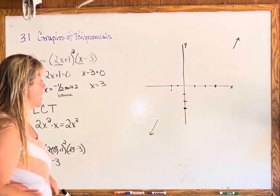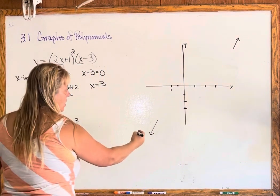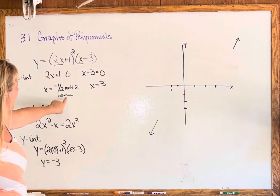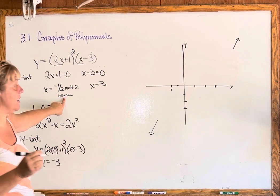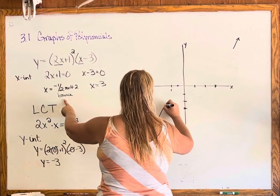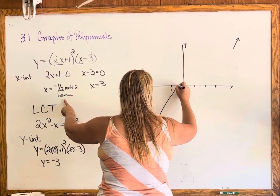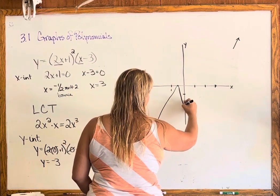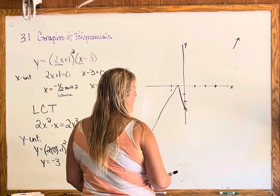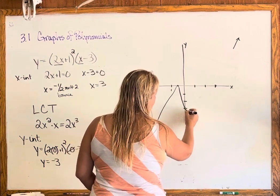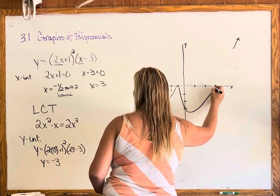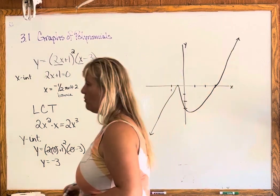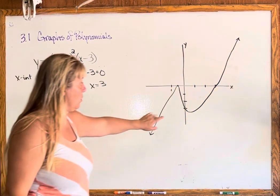Going from left to right, we know we're coming from below because of the shape at the endpoints, then we're going up to negative one-half but we're not going to cross through — we're going to bounce. So we come up, bounce, and turn around. Now headed down, we come through our y-intercept, and then we have to get back up. We cross through there because it was only multiplicity one.